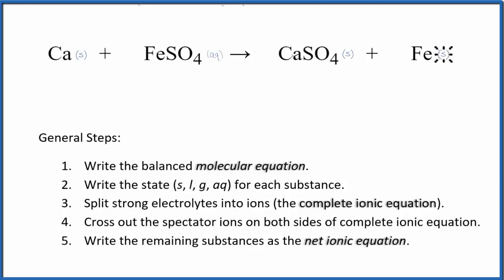So we have the states for our net ionic equation. Now we can split the strong electrolytes into ions. And that's going to give us the complete ionic equation. We can't split calcium apart. It's just calcium. So we're going to just call that calcium. I'll write the states later.